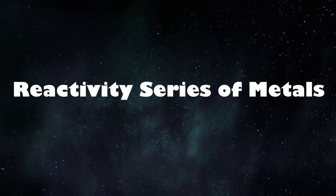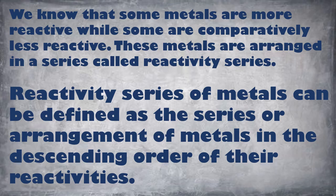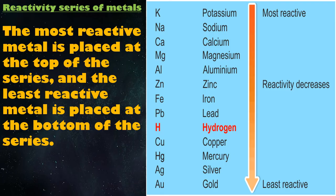Let us study about the reactivity series of metals. We know that some metals are more reactive while some are comparatively less reactive. These metals are arranged in a series called the reactivity series. The reactivity series of metals can be defined as the arrangement of metals in the descending order of their reactivities. In the reactivity series, the most reactive metal is placed at the top while the least reactive metal is placed at the bottom.